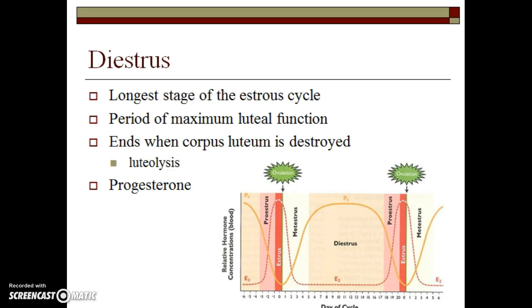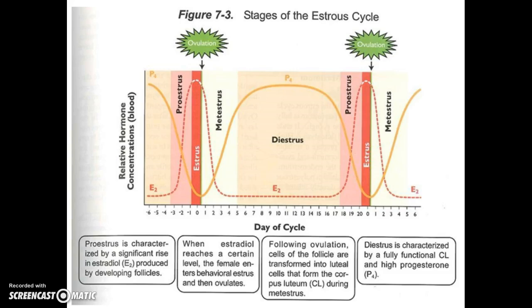Diestrus is the longest stage of the estrous cycle. This is the time when the corpus luteum is secreting sustained levels of progesterone. Diestrus ends when the corpus luteum regresses, and again the dominant hormone being secreted during diestrus is progesterone. Please make sure to study figures 7-2 and 7-3 carefully.